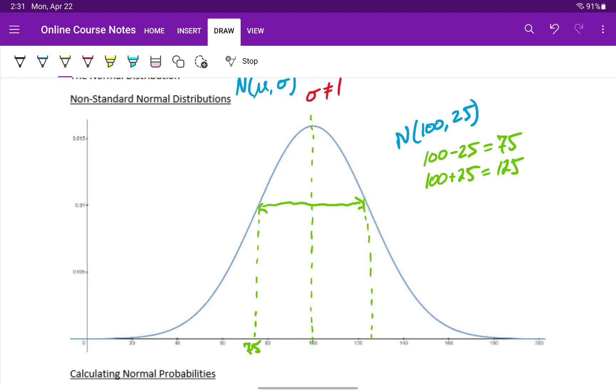Just like we saw with the standard normal distribution, 68% of all data would occur between 75 and 125 for this distribution. We can continue to count in intervals of 25 to find the second standard deviation, third standard deviation, and so on.